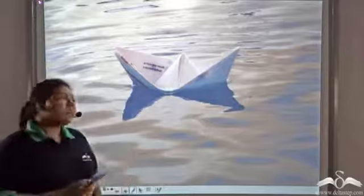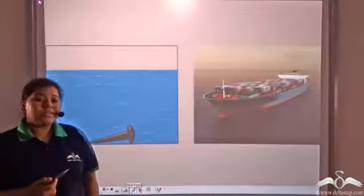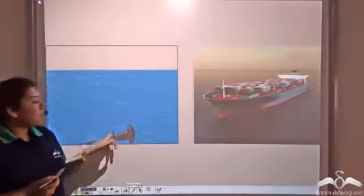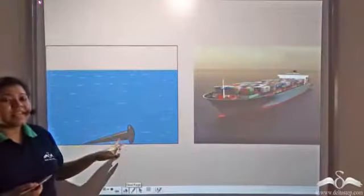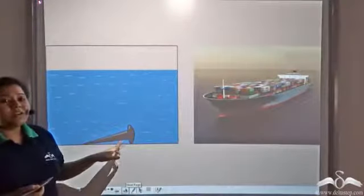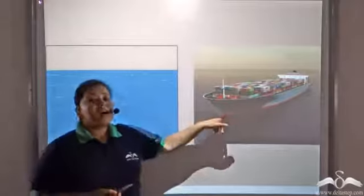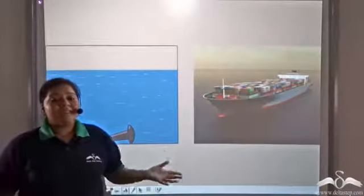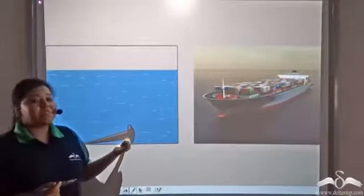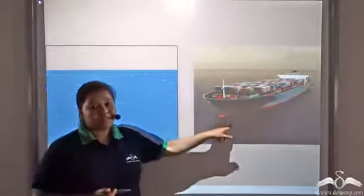Can you tell me how a small iron nail sinks in water, but a huge iron ship — which is thousands of times the mass of this iron pin — floats on water?